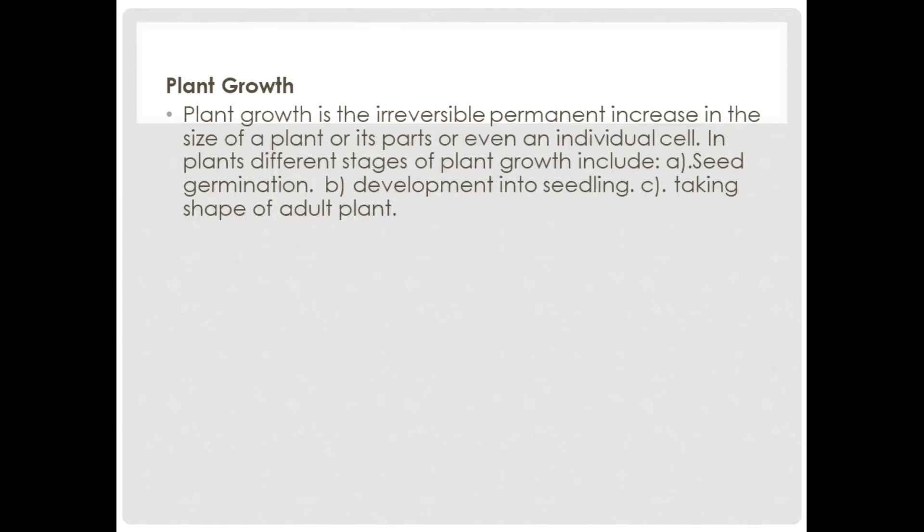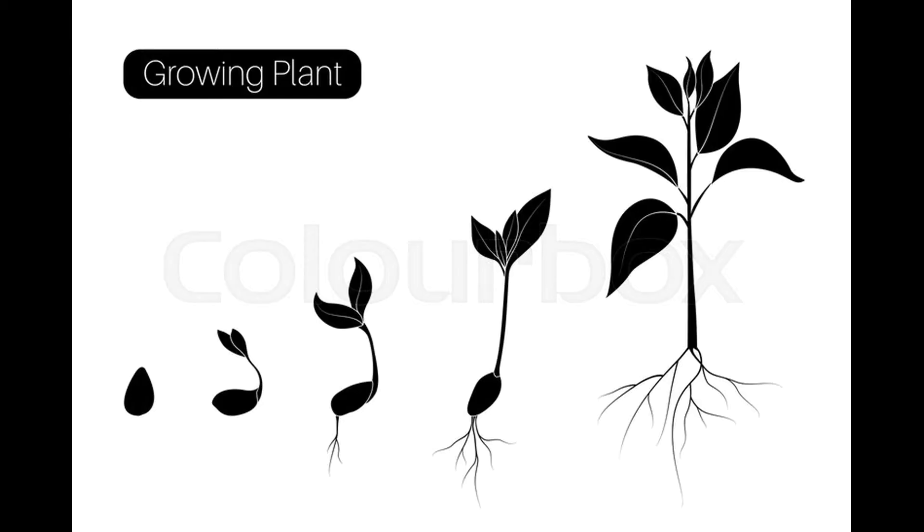Now let's take a look at plant growth. Plant growth is the irreversible permanent increase in the size of a plant or its parts or even an individual cell. In plants, different stages of plant growth include seed germination, development into seedling, and taking shape of an adult plant.